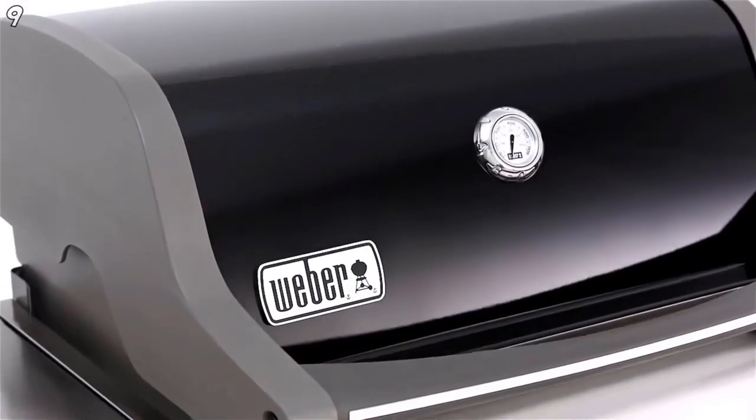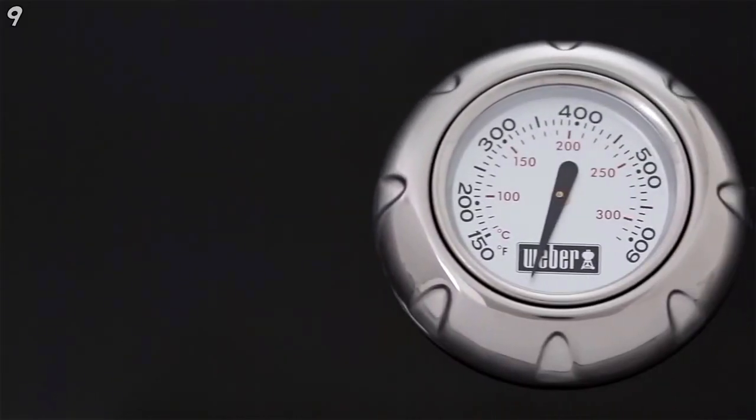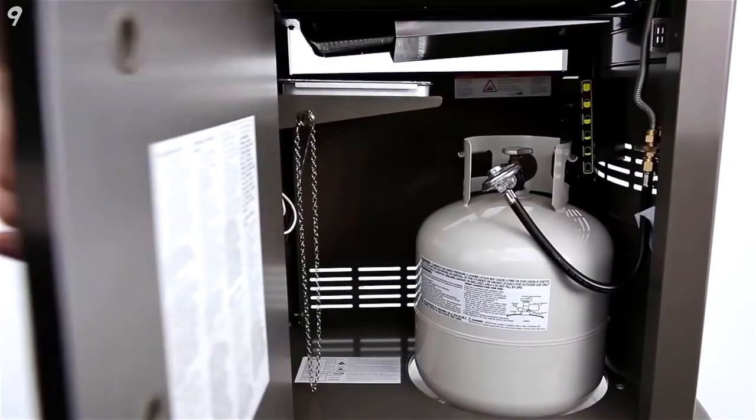The porcelain enameled lid features a center-mounted thermometer that accurately reads the inside temperature of the grill for preheating and cooking. A roomy storage area is enclosed by a painted steel door.